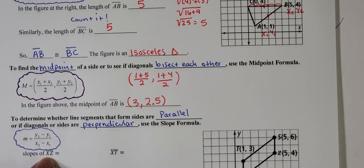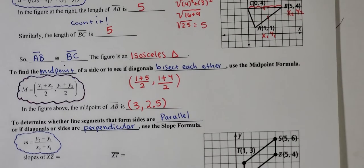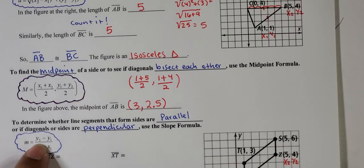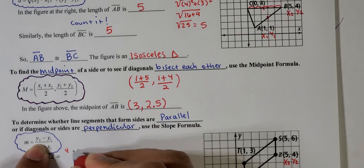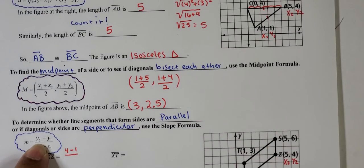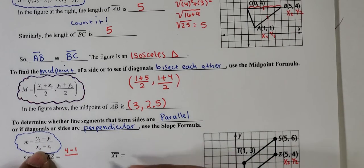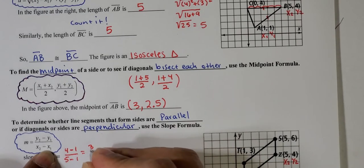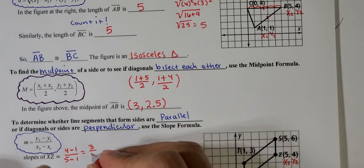This is asking us to find the slope of XZ. So I'm going to label, let's say this is x1, y1, x2, and y2, and then substitute into the formula. My y2 value is 4, so this is 4, and the formula says subtract y1, y1 is 1, over my x2 value, which is 5, minus x1, which is 1.